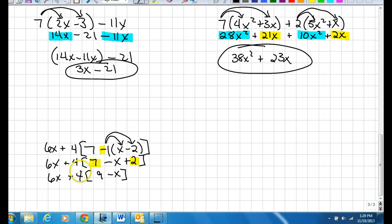Now we can take 4 and distribute that to both of the inside portions. So it will be 6x plus 4 times 9, which is 36, and 4 times negative 1x is negative 4x. These two can be combined. So now we have 6x minus 4x is 2x plus 36.